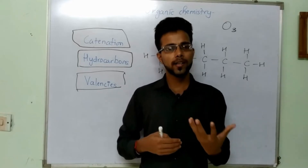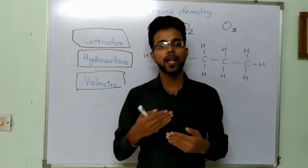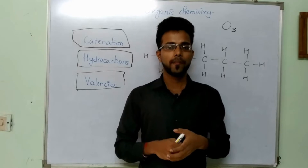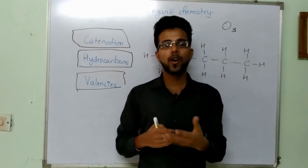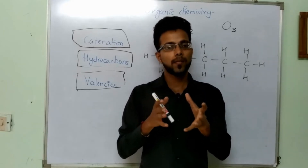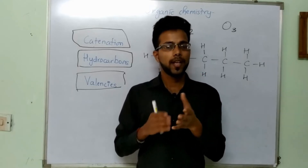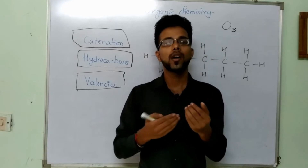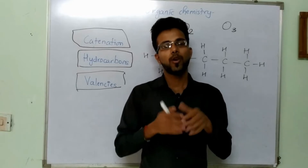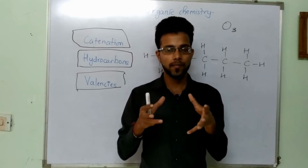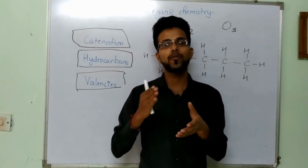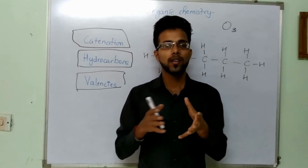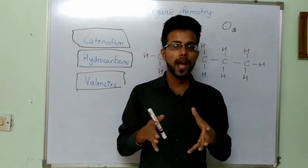What is valency? Every atom — not just carbon, but any atom — has the property where it can form a limited number of bonds. Carbon can make 4 bonds; if it becomes 5 or drops to 3, it becomes unstable. Every element has a set number of valencies that it must satisfy in order to become stable. That is what we call valency.